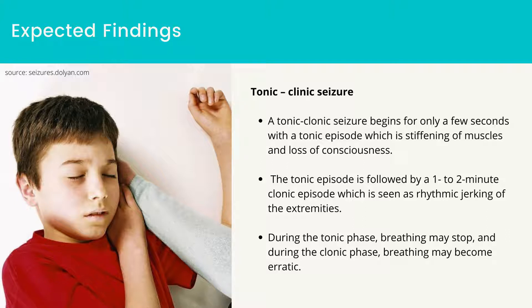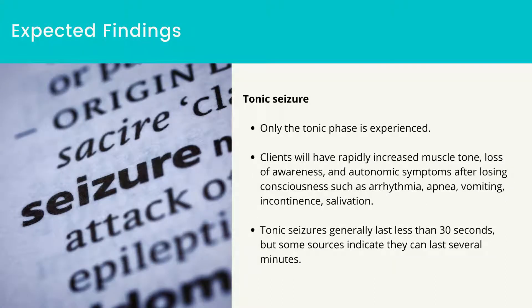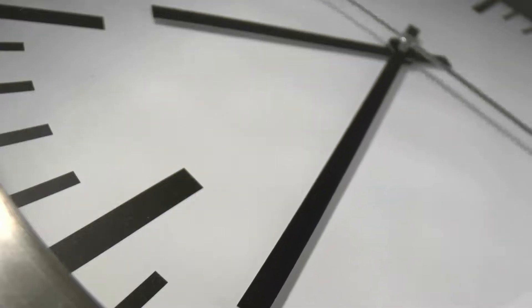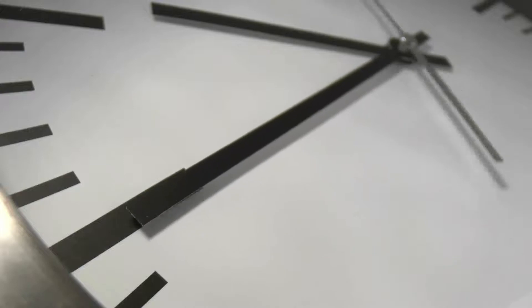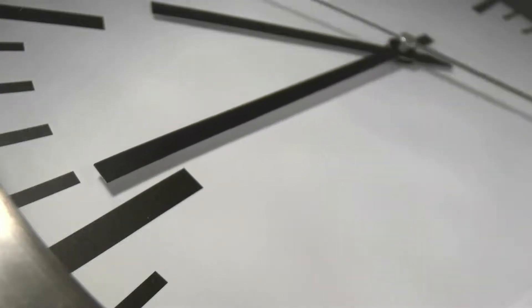Cyanosis can accompany breathing irregularities. Biting of the cheek or tongue can occur during the clonic phase. Incontinence can also accompany a tonic-clonic seizure. During the post-ictal phase, a period of confusion and sleepiness follows the seizure. Tonic seizure: only the tonic phase is experienced. Clients will have rapid increased muscle tone, loss of awareness, and autonomic symptoms after losing consciousness, such as arrhythmia, apnea, vomiting, incontinence, and salivation. Tonic seizures generally last less than 30 seconds, but some sources indicate they can last several minutes.